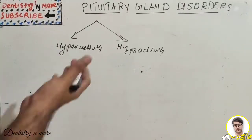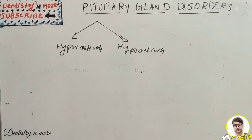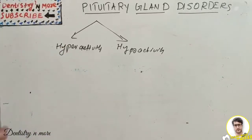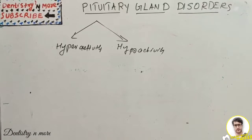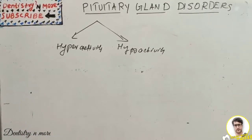In anterior pituitary, hyperactivity causes gigantism, acromegaly, and Cushing's disease, whereas hypoactivity causes dwarfism and Simmons disease. For the posterior pituitary, hyperactivity causes Syndrome of Inappropriate Hypersecretion of ADH (anti-diuretic hormone), and hypoactivity causes diabetes insipidus. We'll learn these one by one.